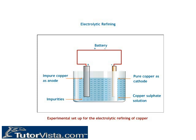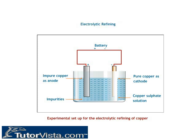Refining of metals: Free metals obtained by various reduction processes may have several impurities, which may be other metals. The most widely used method for refining impure metals is electrolytic refining. Many metals such as copper, zinc, tin, nickel, silver, gold, etc. are refined electrolytically.